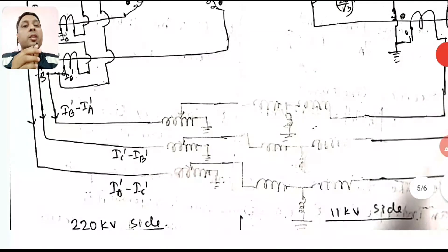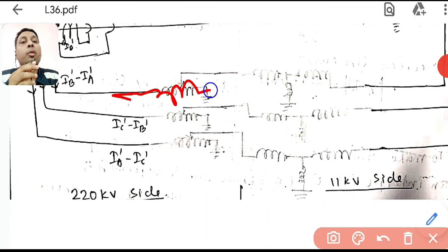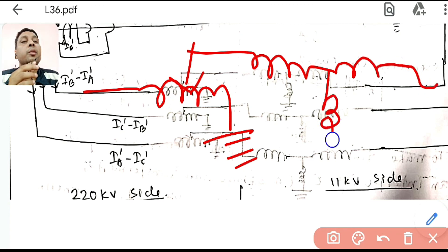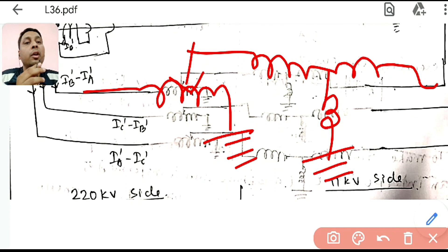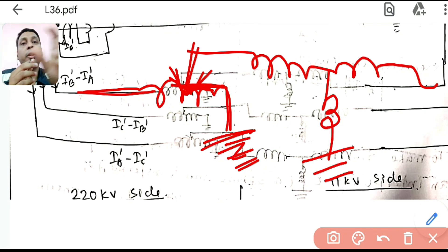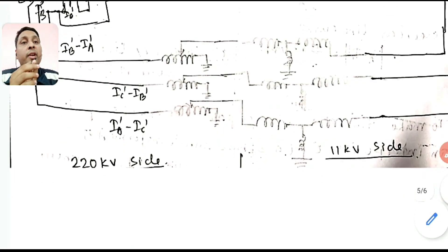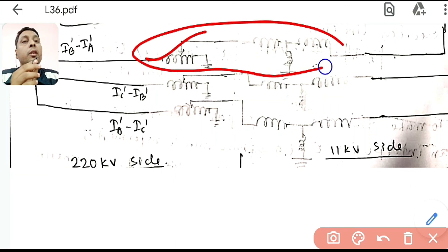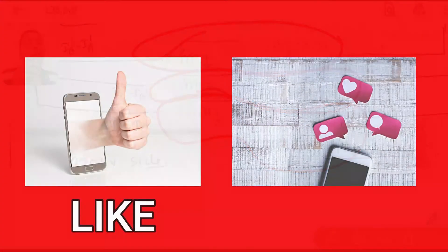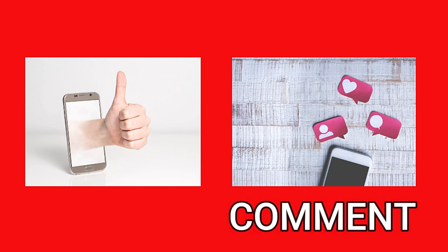In the connection diagram, the auto-transformer (interposing CT) is placed in the pilot wire on the 220 kV side. One terminal is grounded and the output is tapped at the appropriate point to give the required ratio. This is shown for one phase; all three phases are connected similarly to the restraining and operating coils of the percentage bias differential relay. This concludes the numerical portion of differential protection for a three-phase transformer.